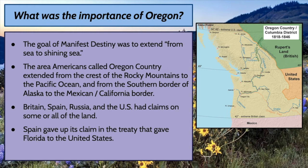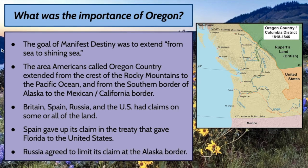Spain gave up its claim to this land in the treaty that gave Florida to the United States. In that treaty, Spain also gave up its claim to any of the Oregon territory. And Russia agreed to limit its claim to the 54-40 line — right here — so this section of Alaska was Russian, as was all of Alaska at the time.